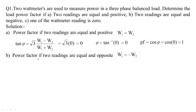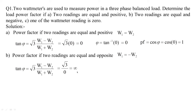What if two readings are equal but of opposite sign? Here we take W1 = -W2 and substitute into the tan φ formula, giving us infinity. The angle between voltage and current would be 90 degrees, therefore the power factor equals zero, since cos 90 is zero.